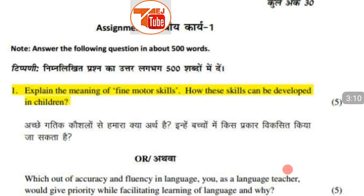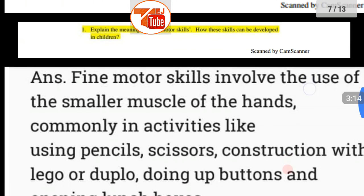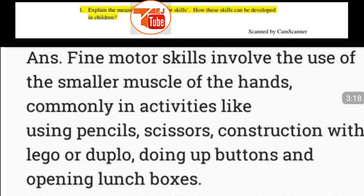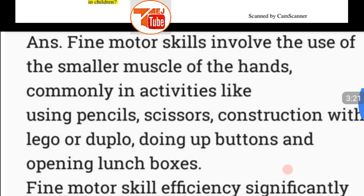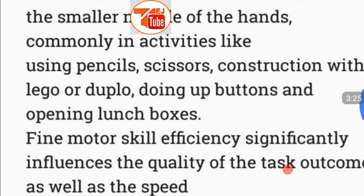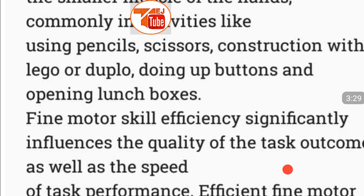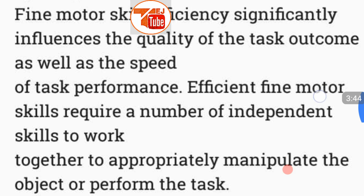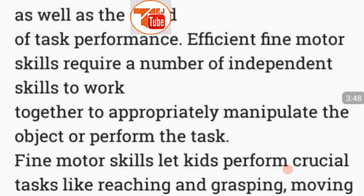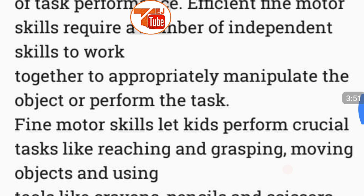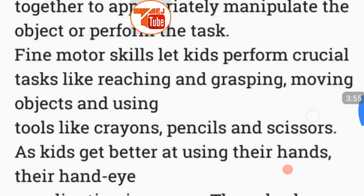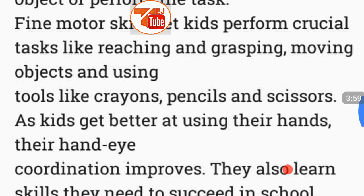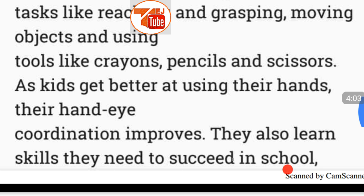The answer to question one — fine motor skills involve the use of the smaller muscles of the hands, commonly in activities like using pencils, scissors, construction with Lego or Duplo, doing up buttons, and opening lunch boxes. Fine motor skills efficiency significantly influences the quality and speed of task performance. Fine motor skills let kids perform crucial tasks like reaching and grasping, moving objects, and using tools like crayons, pencils, and scissors.